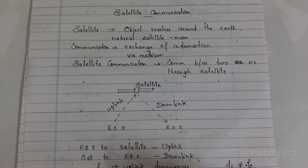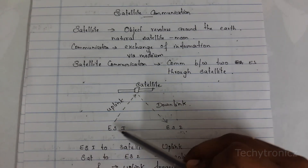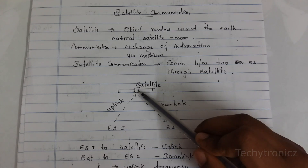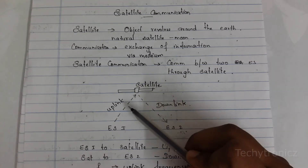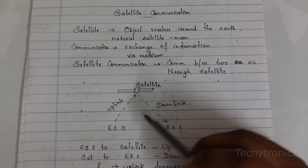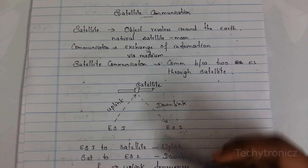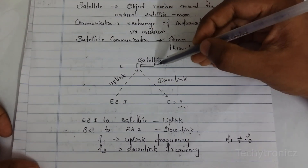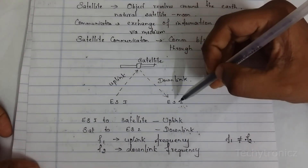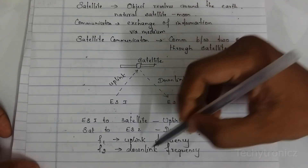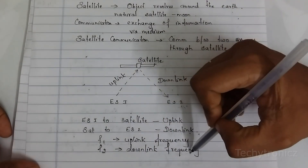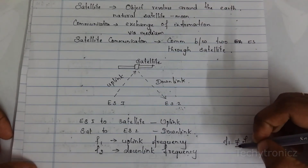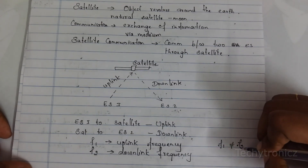When the signal or when the information reaches the satellite, the satellite sends this information to a particular Earth Station 2. That is called downlink. The information from Earth Station 1 to satellite — from ground to satellite — is called uplink. And from satellite to earth station is called downlink. Both the frequencies are not the same for the communication.